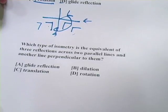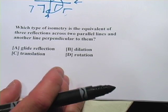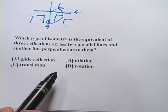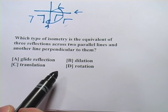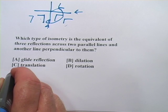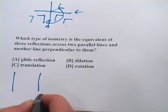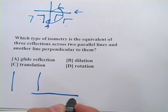All right, let's look at one more. It says, which type of isometry is the equivalent of three reflections across two parallel lines and another line perpendicular to them? So let's do this. Here's a parallel line. Here's a parallel line. And then here's a line perpendicular. Okay?